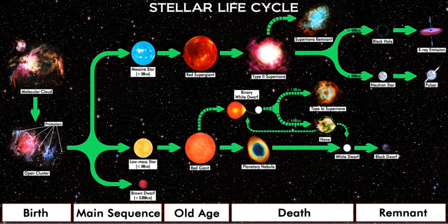Protostars with masses less than roughly 0.08 solar masses never reach temperatures high enough for nuclear fusion of hydrogen to begin. These are known as brown dwarfs. The International Astronomical Union defines brown dwarfs as stars massive enough to fuse deuterium at some point in their lives, 13 Jupiter masses or 0.0125 solar masses.